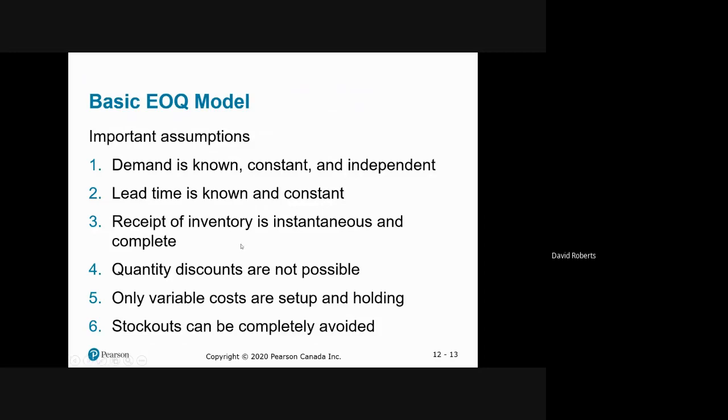So we're going to find out how much we need to order each time we place an order or make a production run. The basic EOQ model is exactly that. Demand is known. It's constant. Lead time is also known and it's constant. So you sell the same amount every day for demand and it takes exactly three days to replenish your stock. Never two, never four. You get all of your goods at once, which is point number three. So if you order 17, you get all 17. There's no partial shipments. There's no quantity discount. So all the units are the same price. So variable costs are set up and holding. Stockouts can be avoided. So you would have no negative inventory or out of stock tags.